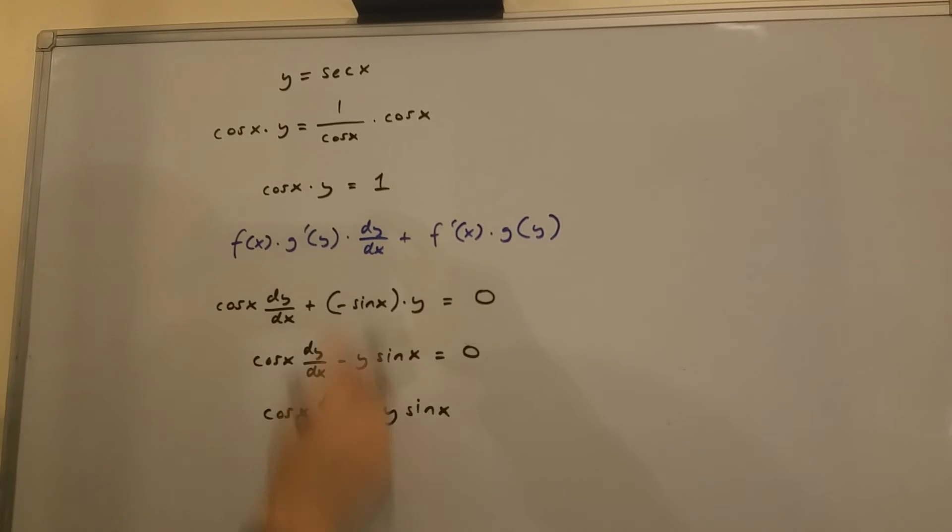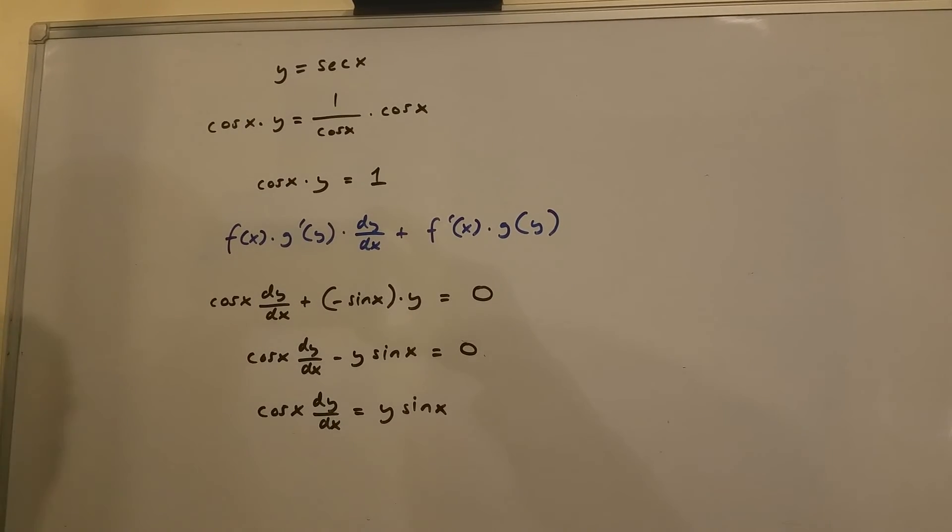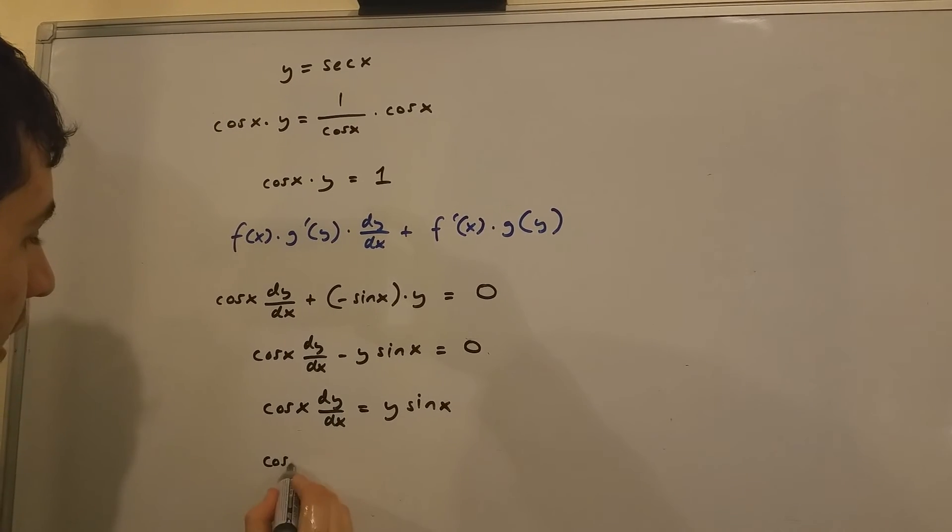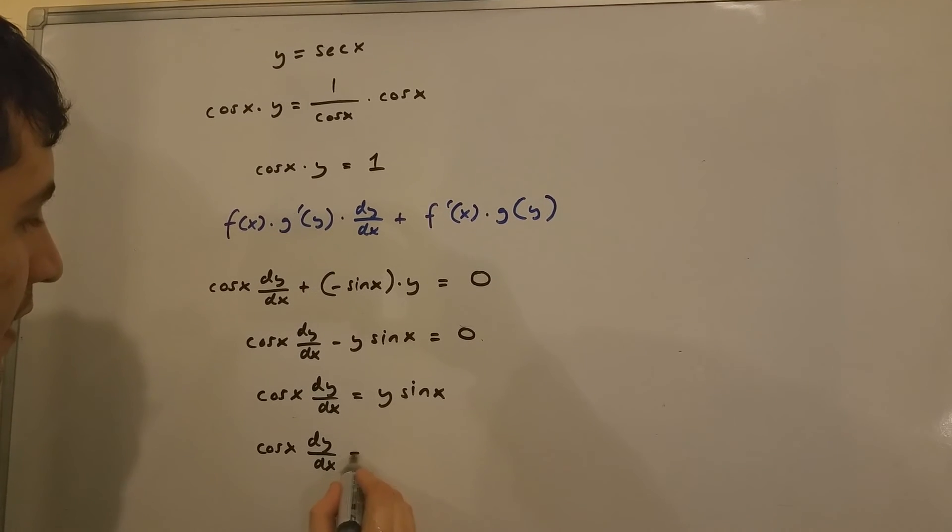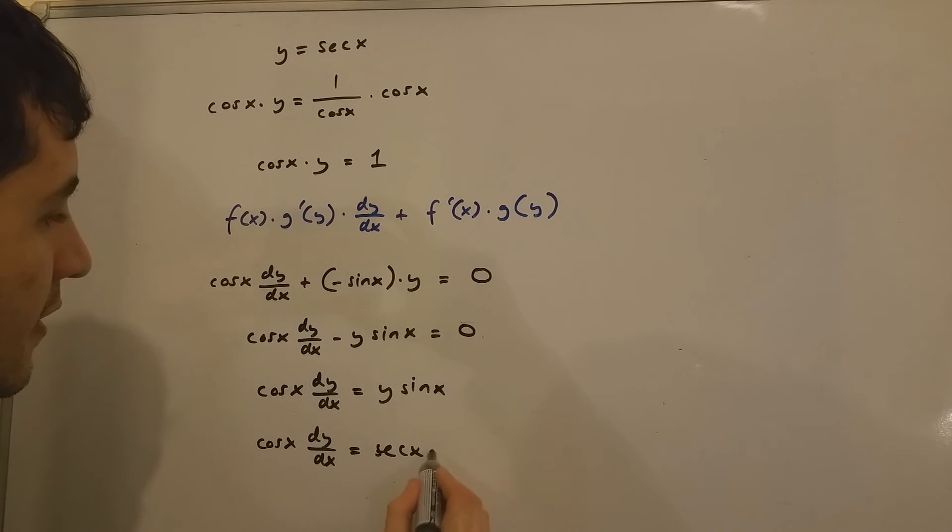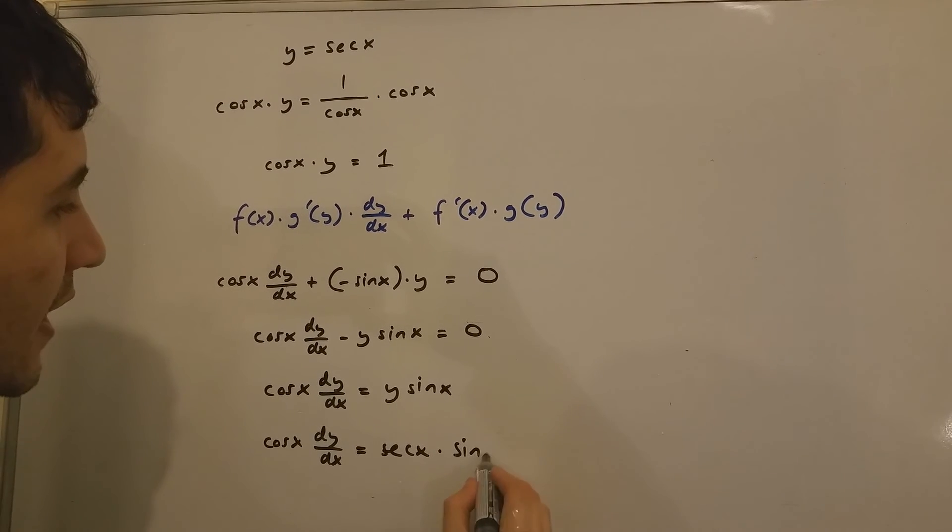However we know that y is equal to sec x. So we've got cos x multiplied by dy over dx equals sec x multiplied by sin x.